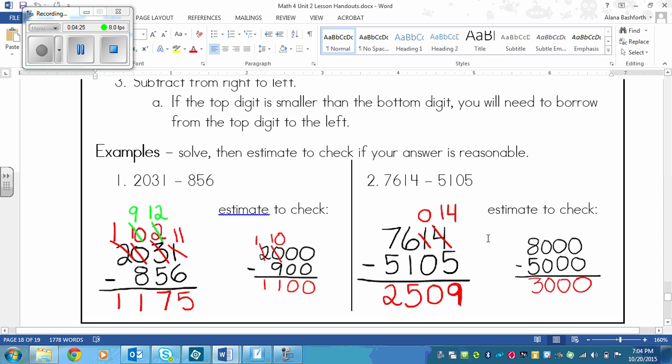Now over on the other side, this one's a little simpler. We've got 7,614 minus 5,105. So this is the larger number. So it's written on top of the smaller number. And we start on the right here.